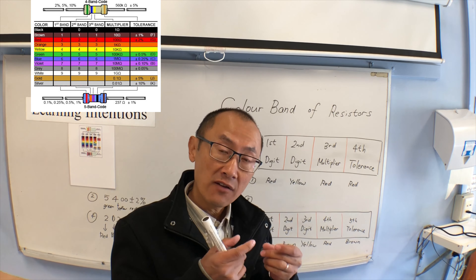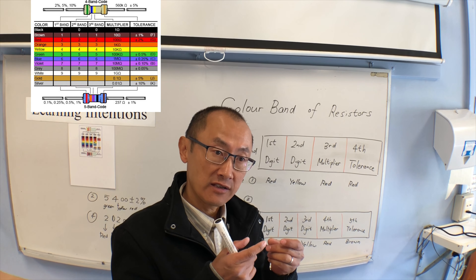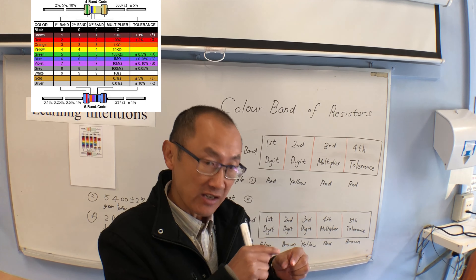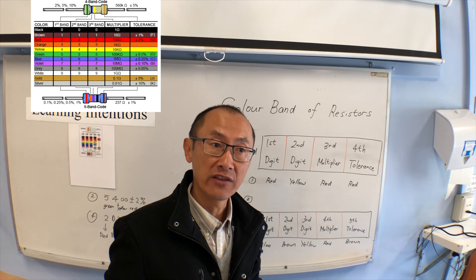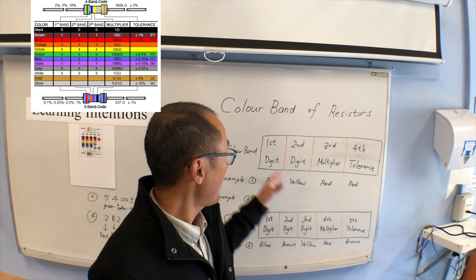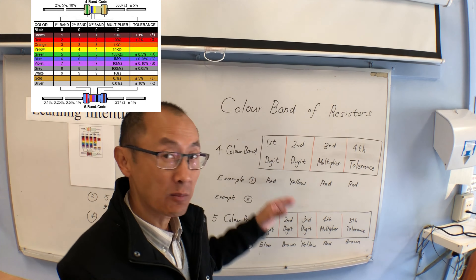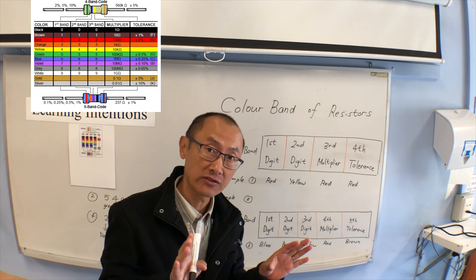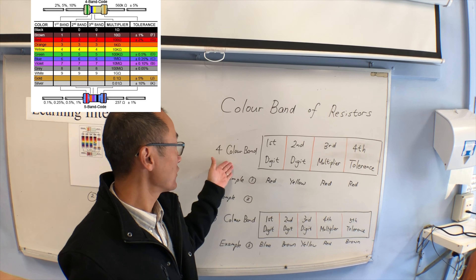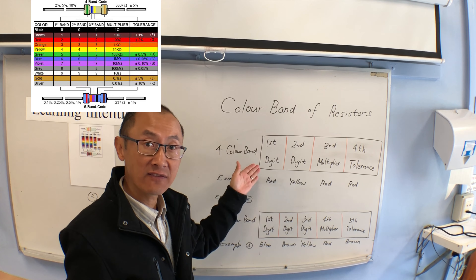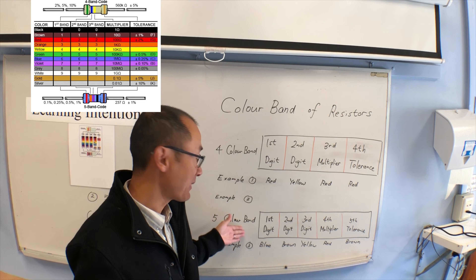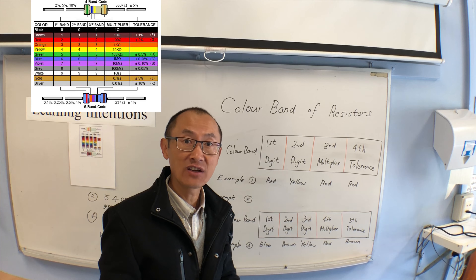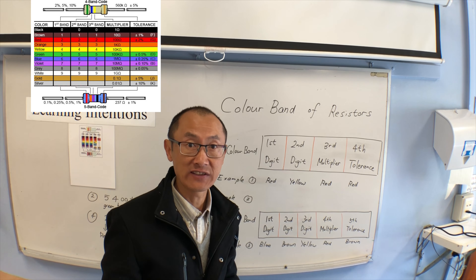When you look at a resistor, you will see some colors on it. Some have four color bands, that means four colors. Some have five colors — five color bands. They all represent the value of resistors.